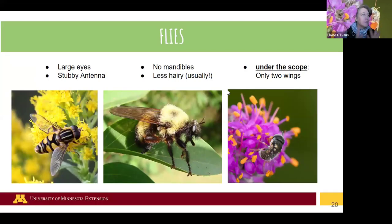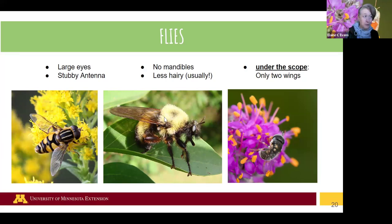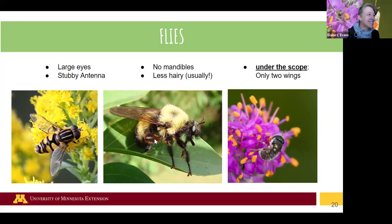Here are some visuals of flies: they've got large eyes and stubby antennae and are usually less hairy, though there are exceptions. In the middle here is a robber fly, which is a really good bumblebee mimic and can be quite hairy — but if you look closely, the eyes look different from bee eyes, and they're not carrying pollen anywhere.